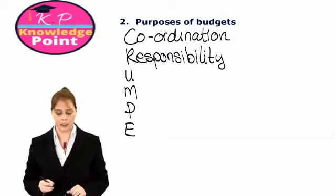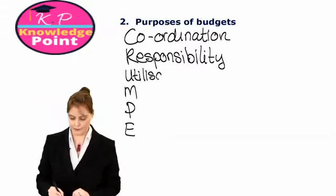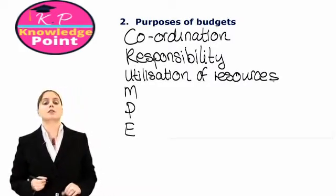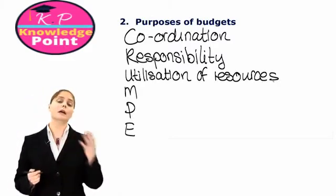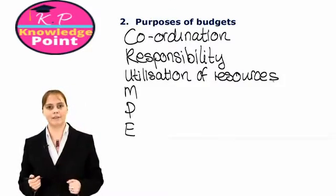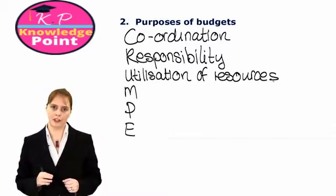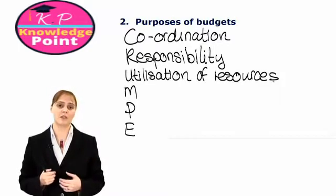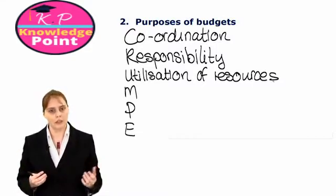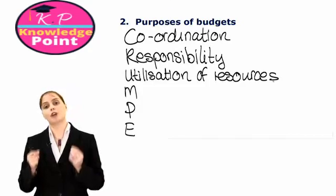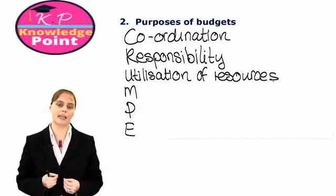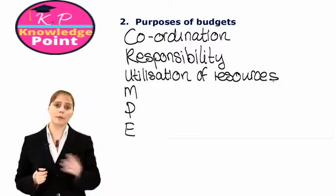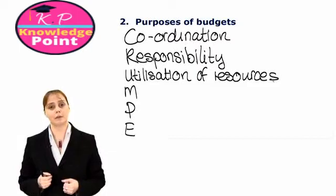The next purpose of budgeting is to ensure appropriate utilization of resources. Perhaps our purchasing manager is responsible for buying materials for the production process. If we have not put a budget in place, the purchasing manager may just order materials from the most convenient supplier without any consideration of cost. However, if we tell the purchasing manager they cannot spend more than £5 per unit on materials, we ensure they will shop around for the best price or negotiate effectively with suppliers.